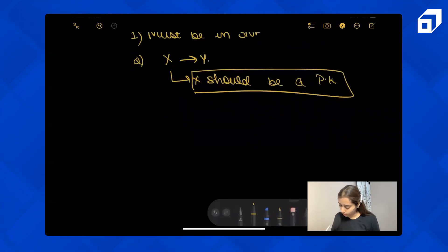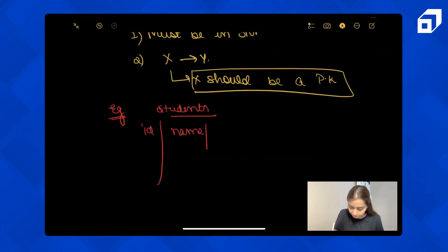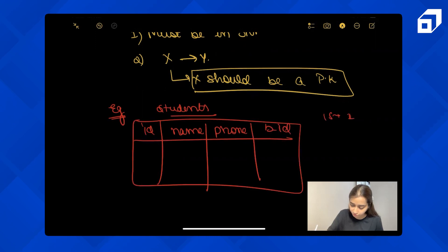Let's understand with the help of an example. Let's take the student's table. In the student's table, we have their ID, their name, their phone number, and their batch ID. One student can have one phone number.